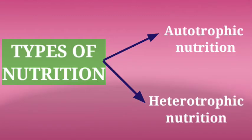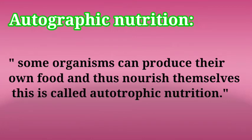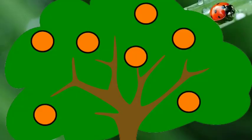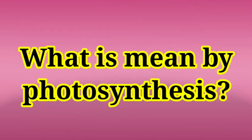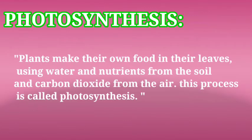Now let's discuss types of nutrition. The first type is autotrophic nutrition. Some organisms can produce their own food and thus nourish themselves — this is called autotrophic nutrition. Many green plants perform the process of photosynthesis to prepare their own food. Plants make their own food in their leaves using water and nutrients from the soil and carbon dioxide from the air. This process is called photosynthesis.